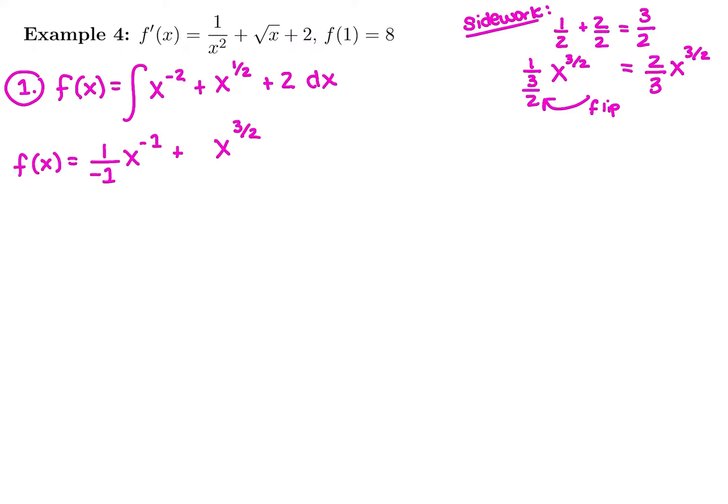I personally like to write my new power, and when I see it's a fraction, I just flip it out front. So my new power is 3 halves, and instead of writing 1 over 3 halves, I'm going to flip it right away to be 2 thirds. Then the antiderivative of 2 is a constant, so it's going to be that constant times x plus c.